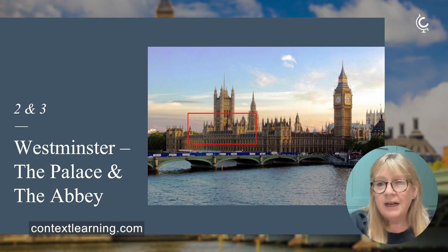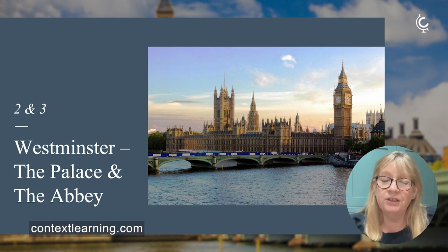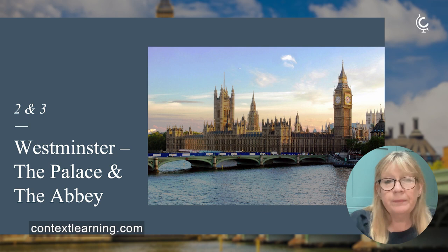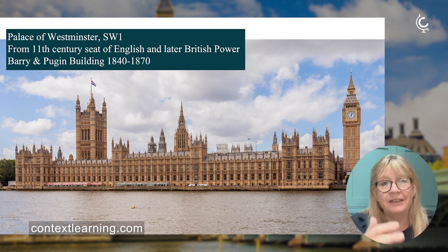We're now going to look at Westminster — the Palace of Westminster, which is our Houses of Parliament, and also the Abbey tucked behind it. When you first look at Westminster it looks like a pseudo-Gothic building, and I'm going to discuss why this form was chosen after the fire of the 1830s destroyed the much earlier medieval, rather ramshackle buildings.